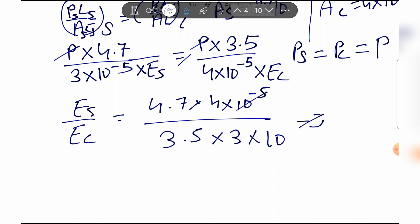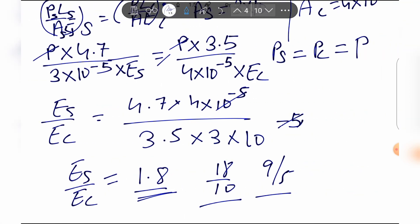So overall the ratio of steel wire to copper wire Young's modulus is 1.8. That's the answer. Thanks for watching.